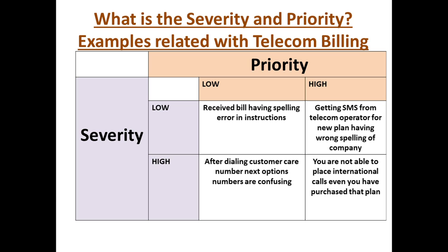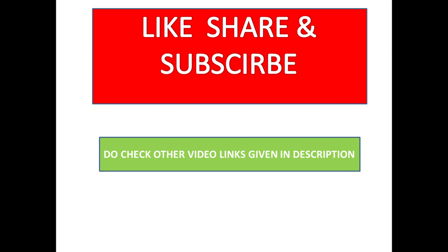High priority and high severity — if you are not able to place an international call even though you have purchased that particular plan, it is high priority and high severity. The customer has selected and paid for that plan and is expecting to make an international call, but the call is not being placed. So this defect is both high severity and high priority.